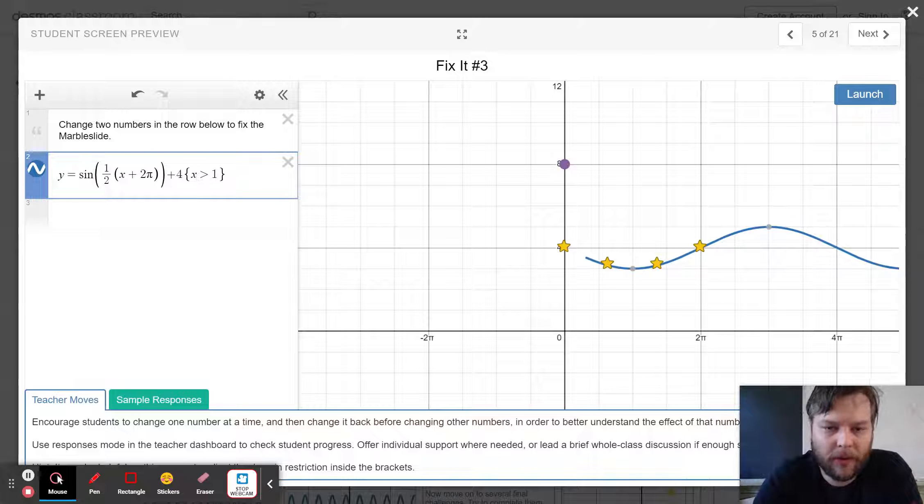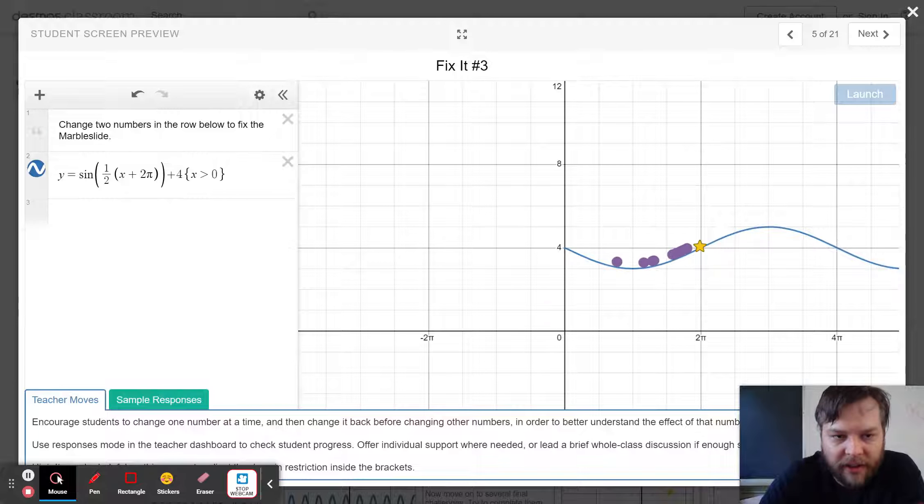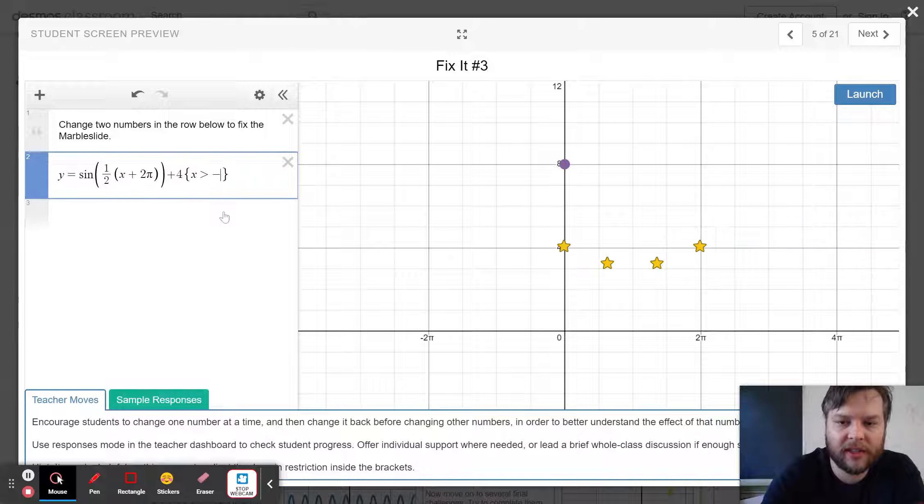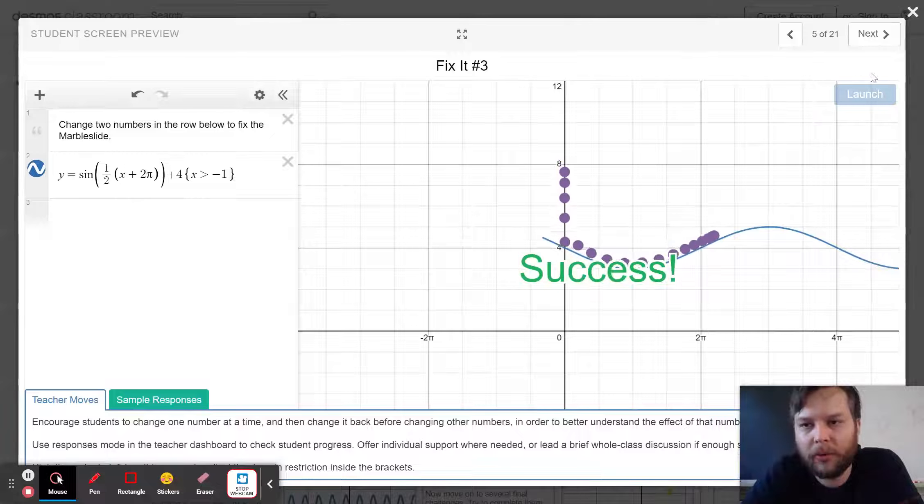And then over here in the squiggle brackets is a domain restriction. It's a cut on my function. So I'm trying it at x equals 0. They kind of fell off the edge. Let's try x equals negative 1 to give it a little bit more of a ramp. Bueno.